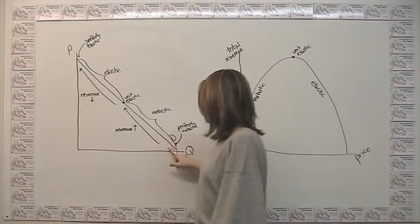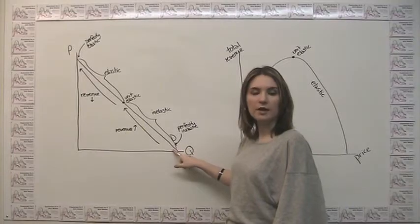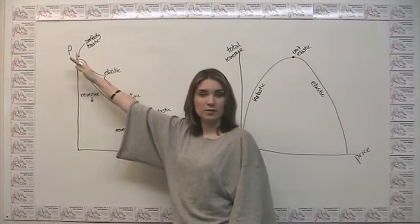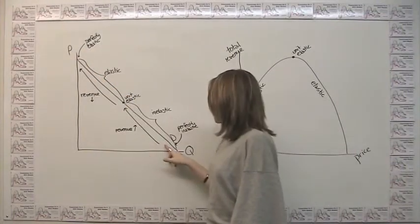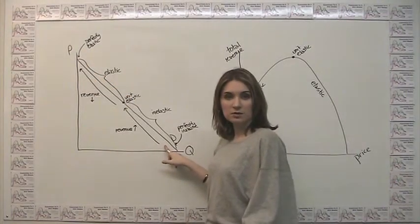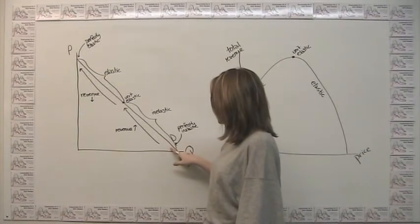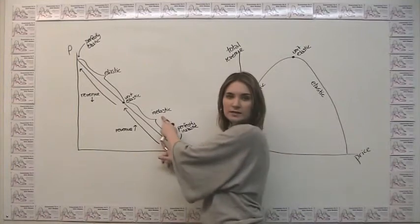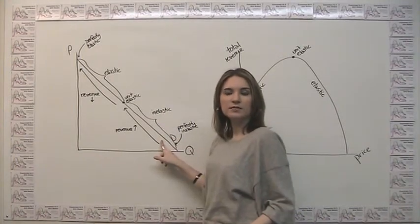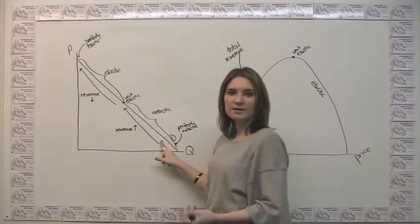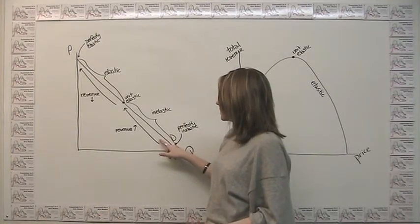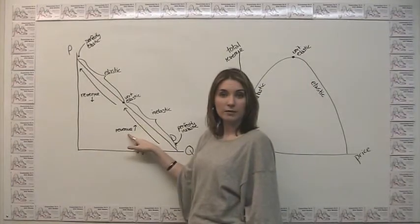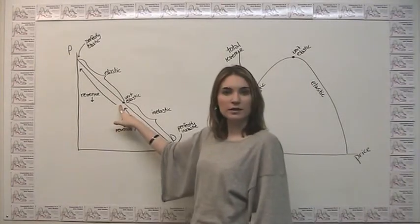Let's consider here going from a price of 0 and then increasing that price, or going this direction along our demand curve. What we see that corresponds to what we just discussed is as we start increasing our price, we're in a region where our demand is inelastic. So in response to a price increase, we should get a revenue increase. So in this region here, as we increase our price, our revenue is going up.